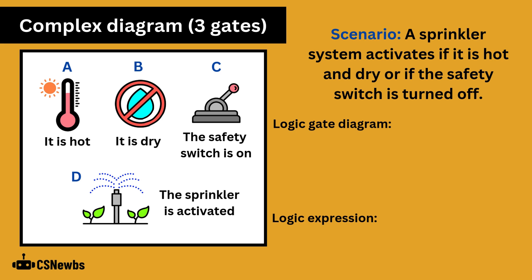Here is another scenario. A sprinkler system activates if it is hot and dry or if the safety switch is turned off. A represents it being hot, B represents it being dry, C represents the safety switch is on, and D represents the sprinkler is activated.